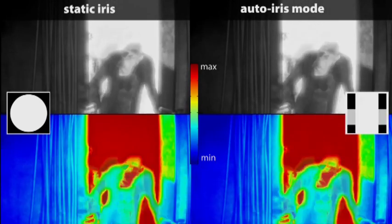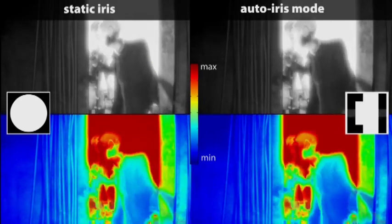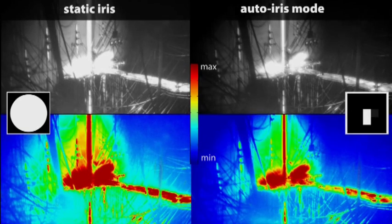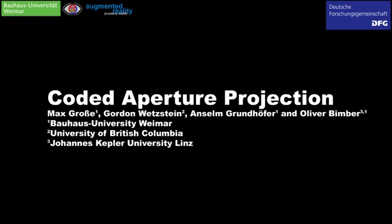Adaptive coded apertures optimize depth of field versus light throughput based on visual perception limitations and can potentially lead to a new generation of auto-iris projector lenses.